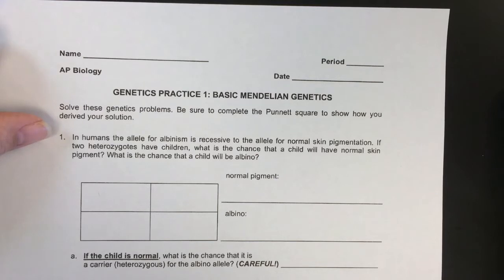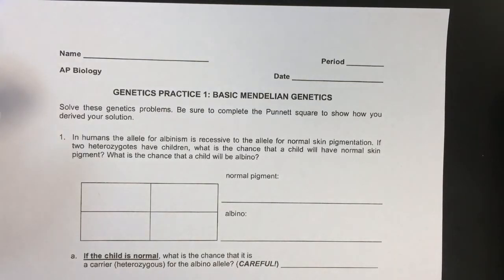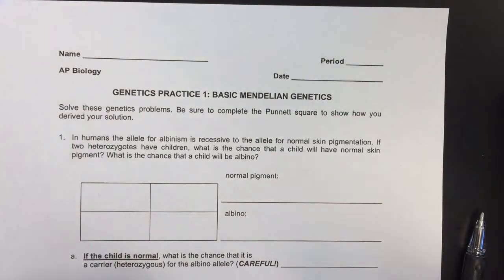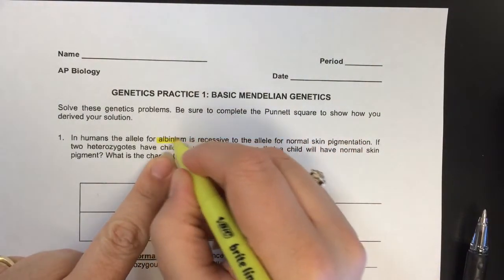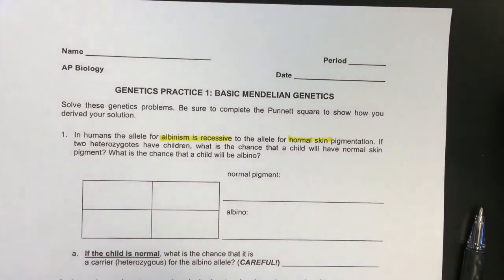In humans, the allele for albinism is recessive to the allele for normal skin pigmentation. If two heterozygotes have children, what's the chance that a child will have normal skin pigment? What's the chance that a child will be albino? I don't give you the letters to use, so you get to pick whatever letter you choose. Tradition is to go with the dominant trait — albino is recessive, which means normal skin must be dominant.